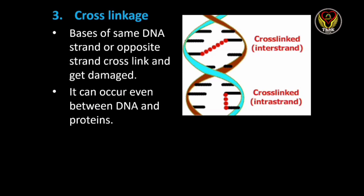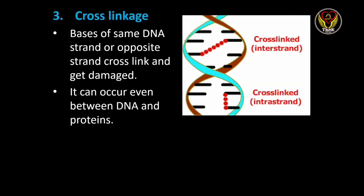The next type of DNA damage is cross linkage. In this type, instead of pairing with the complementary base in the same position, disorganized DNA base pairing occurs — for example, a base in the first position pairs with another base in the fourth position. This may be intra-strand linkage, that is within the same strand, or inter-strand linkage, which is between two different strands. Interestingly, cross linkage can also take place between protein and DNA.